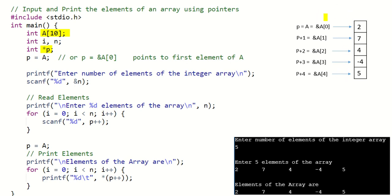To point to the first element of the array we can write P = &A[0], or simply P = A, since the array name points to the first element of the array. To access the second element we can use P plus 1.